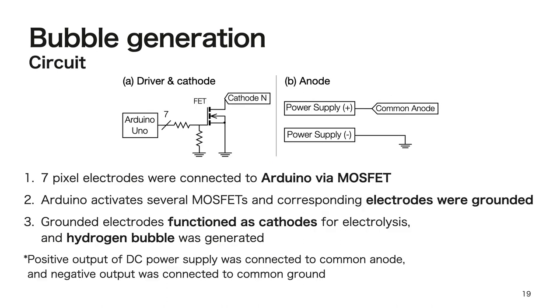Here is the circuit of Utakata. Basically, the display is realized by grounding an arbitrary electrode by switching with MOS FETs. First, 7-pixel electrodes were connected to an Arduino via MOS FETs. When the Arduino activates several MOS FETs, the corresponding pixel electrodes were connected to ground. Subsequently, the electrodes functioned as cathodes for electrolysis, and hydrogen was generated from the electrodes.